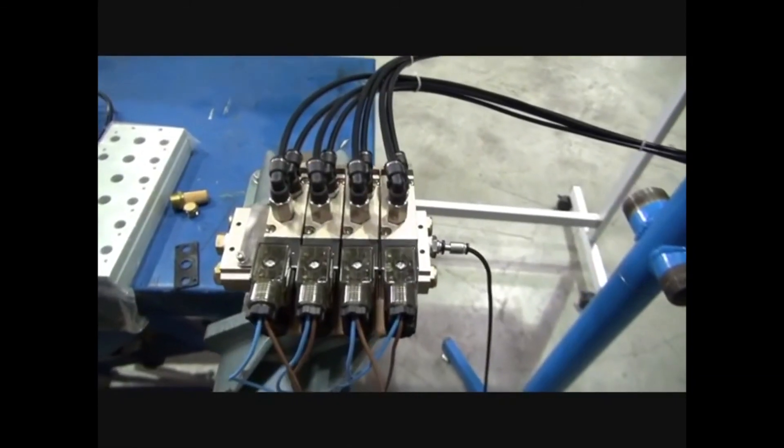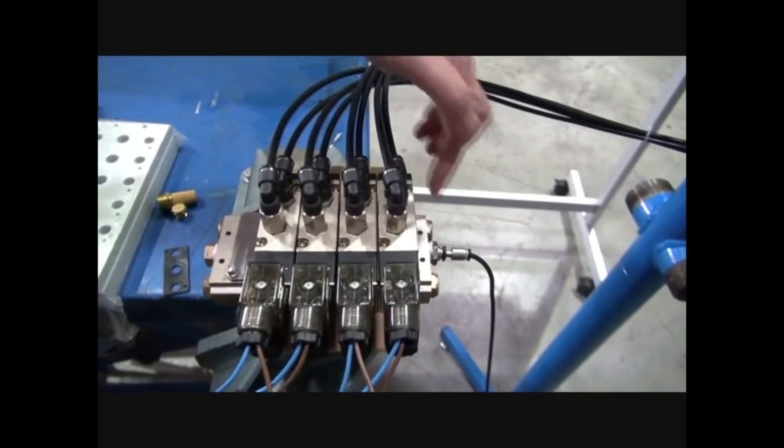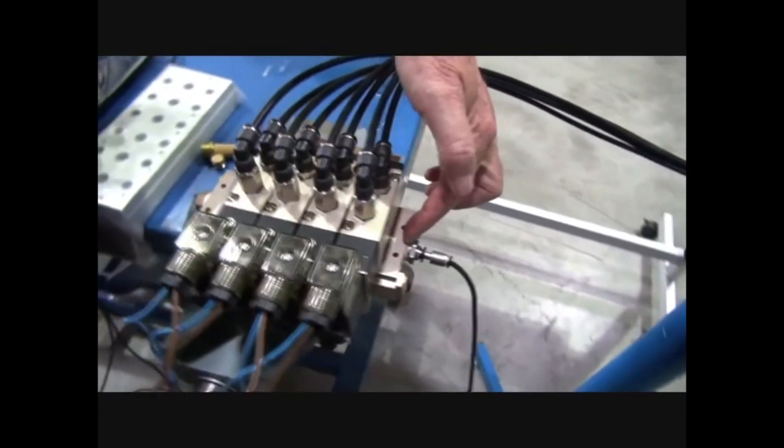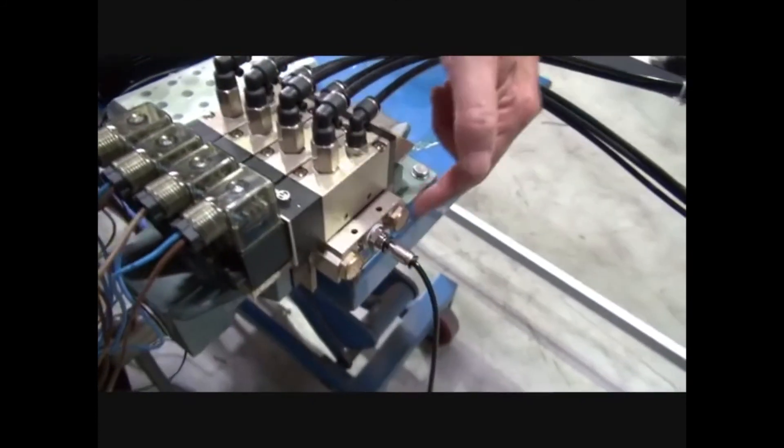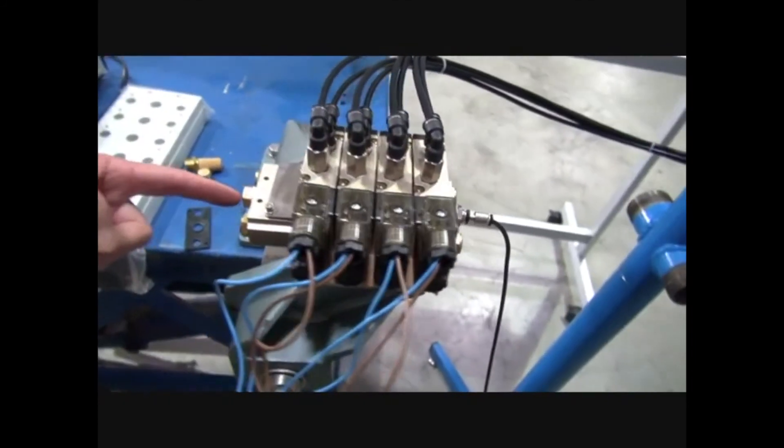This is a working model showing how it's been piped up. The supply comes in here on the right hand side with two exhaust port silencers. On the other side the supply is blanked off.